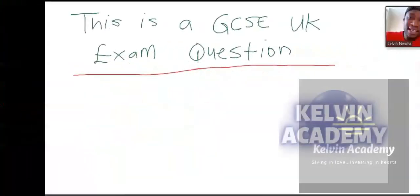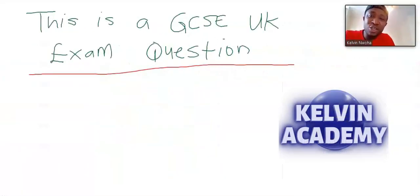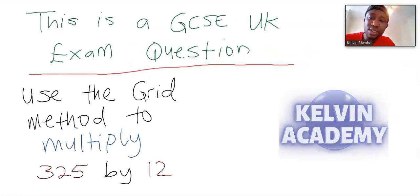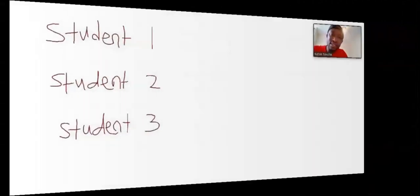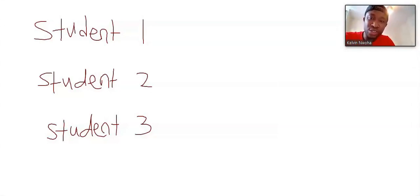Let's consider this GCSE UK exam question. Use the grade method to multiply 325 by 12. Three students solved this question. Three of them got the answers right, but only one person actually got a grade for it.